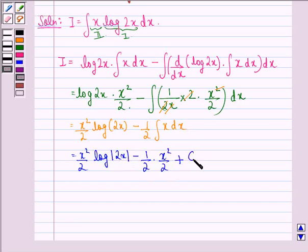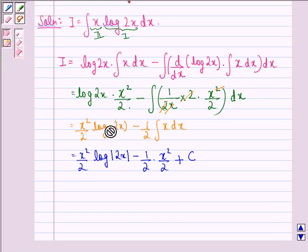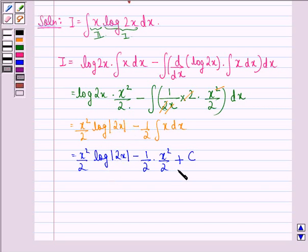We put a mod sign here because log is not defined for negative values, so we have log of mod 2x. This can be written as x square by 2 log of mod 2x minus x square by 4 plus c.